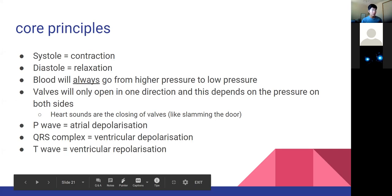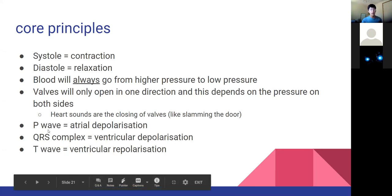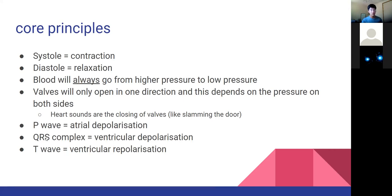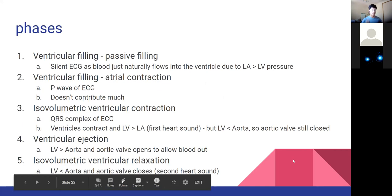In terms of our cardiac cycle: systole is contraction, diastole is relaxation. Blood will always go from high pressure to low pressure. Valves help to stop the backflow of blood, depending on the pressure on both sides of the valve. Our heart sounds come from the closing of valves - think of it as slamming the door closed. When we come to our ECG: the P wave is atrial depolarization or atrial contraction, QRS is ventricular depolarization or contraction, and the T wave is ventricular repolarization, which is relaxation. The main thing to note is what valves are open and closed, and which part of the ECG lines up with which phase.